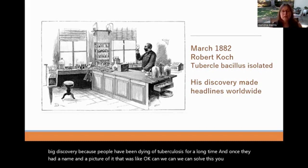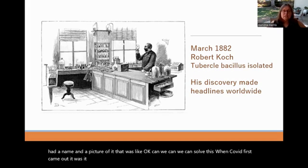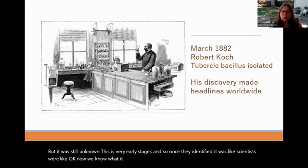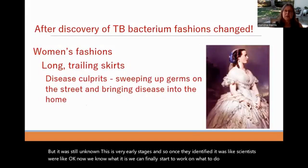This was a big discovery because people had been dying of tuberculosis for a very long time. Once they had a name and a picture of it, they could start to work on what to do — to treat it, to prevent it. It was similar to when COVID first came out — it was thought to be a virus but was still unknown. Once identified, scientists could finally start working on treatment and prevention.